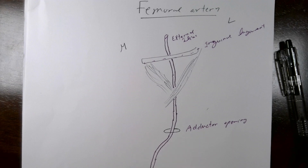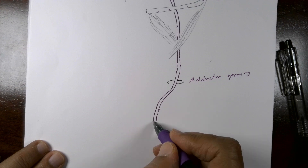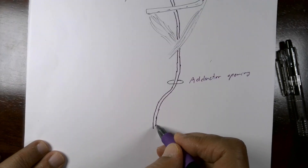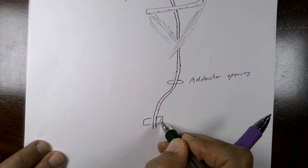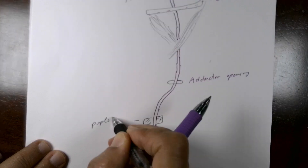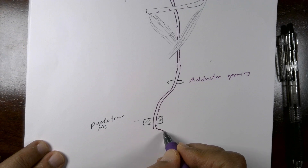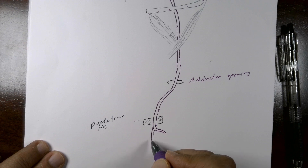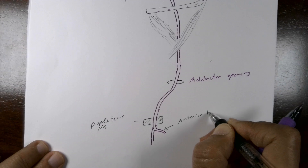After passing through the adductor opening, the femoral artery continues as the popliteal artery in the back of the thigh. The popliteal artery travels through the popliteal fossa, crossing from the upper to the lower part. At the lower border of the popliteus muscle, it splits into two terminal branches: one going to the anterior aspect of the leg and one continuing in the posterior aspect.